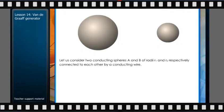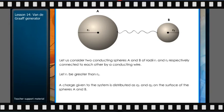Let us consider two conducting spheres A and B of radii R1 and R2 respectively, connected to each other by a conducting wire. Let R1 be greater than R2. A charge given to the system is distributed as Q1 and Q2 on the surface of the spheres A and B.